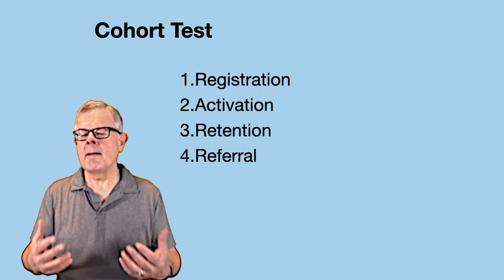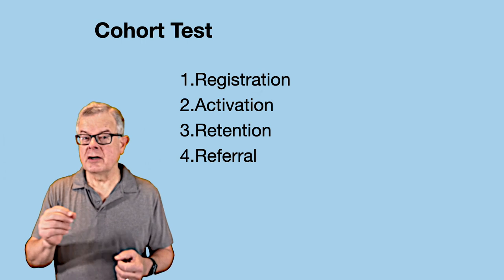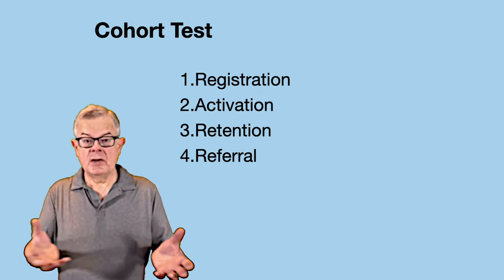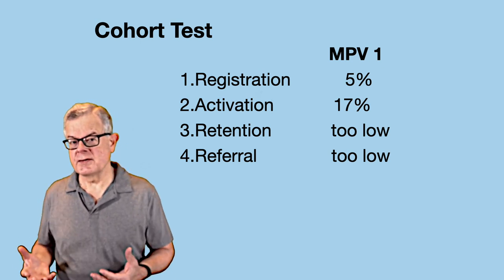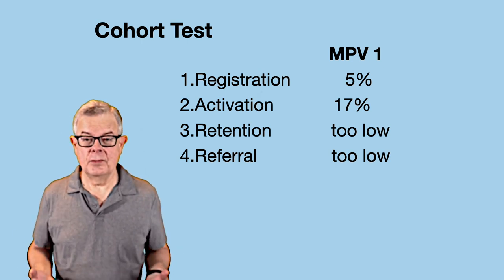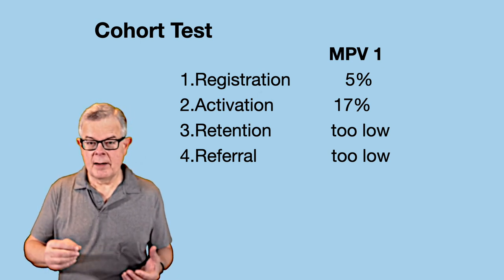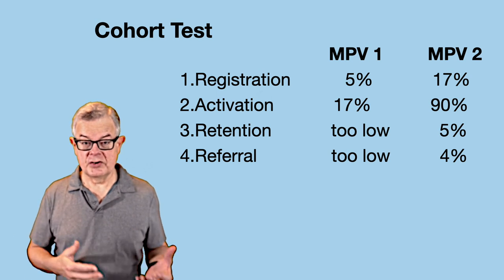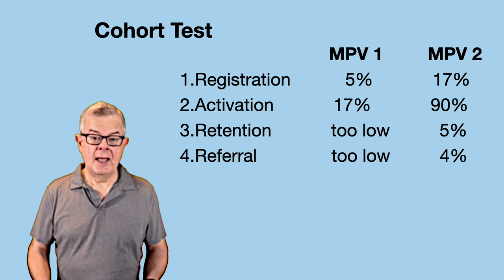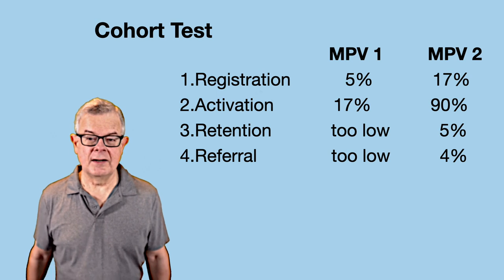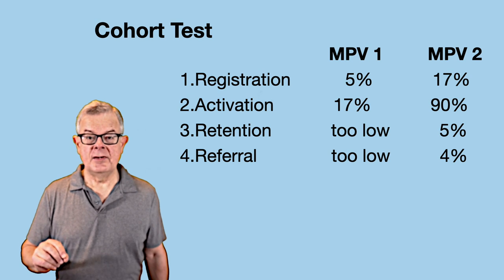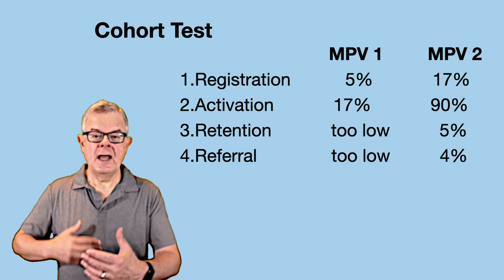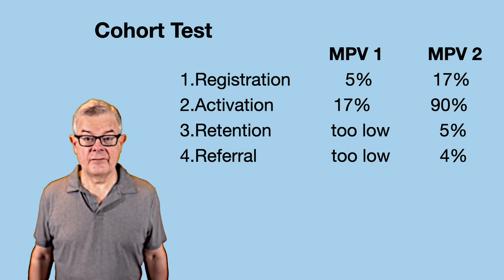For optimization, consider a cohort test looking at registration, activation, retention, and referral rates. You create a first MVP and get initial results — say 5% registration, 17% activation, but very low retention and referral. You talk to customers, make tweaks, and release MVP two, getting considerably better results: 17% registration, 90% activation, and at least measurable retention and referral at 5% and 4%. Maybe that's good enough, or maybe you run MVP three, continuing to experiment until you achieve conversion rates sufficient for a viable business model.